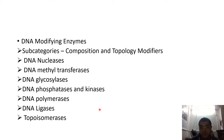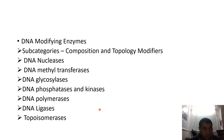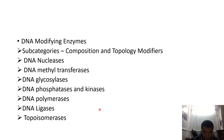Restriction endonucleases cleave double-stranded DNA at a limited number of sequences — specifically at recognition sequences. More than 4,300 restriction endonucleases have been identified. For further study, you should go to rebase.neb.com, where you will get a lot of information regarding these restriction endonucleases.